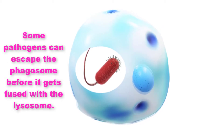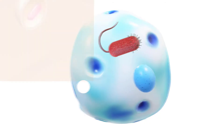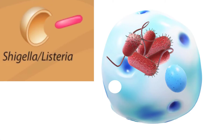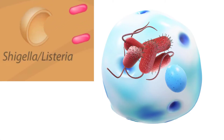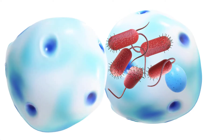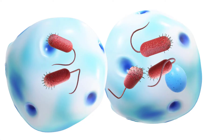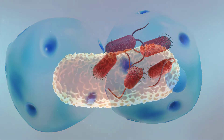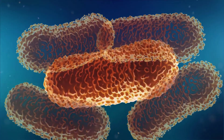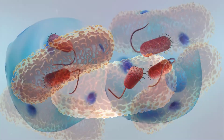First, some pathogens can simply escape from the phagosome before fusion occurs. Pathogens such as Shigella and Listeria use this strategy and then undergo unrestricted growth in the cytoplasm of the host cell. These pathogens form actin tails, which allows them to move within the cell and even into adjacent cells where they continue the infection, spreading from cell to cell without ever encountering the extracellular environment where they would be vulnerable to attack by the immune system.